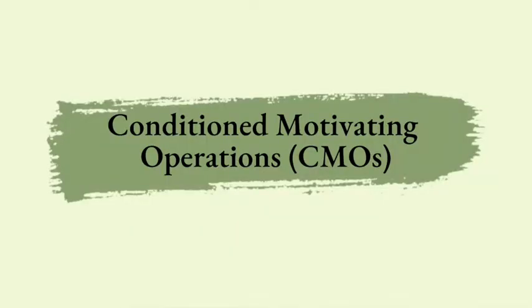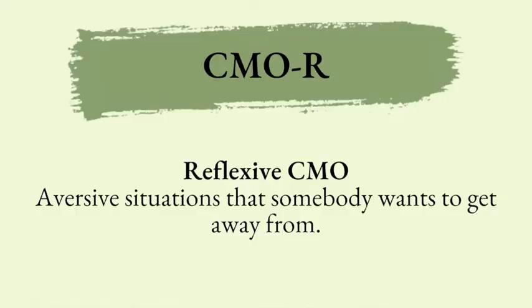Now we're going to go through all the conditioned motivating operations — I'm going to start calling them CMOs — because they're on the exam. The first type is the reflexive CMO, or CMO-R. Think about those aversive situations that somebody wants to get away from. For example, seeing a supervisor you don't like walking down the hallway — she's a CMO-R. A lot of times this leads to problem behavior, so you need to ask: why is this situation a conditioned aversive and how can I make it less aversive?